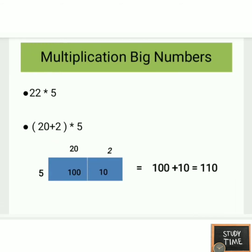Next, multiplying big numbers. In order to multiply big numbers we are going to use a shortcut — big numbers can be split into two parts. For example, 22 into 5: 22 can be written as 20 plus 2. First multiply 5 into 20, which is 100, and 5 into 2, which is 10. Then 100 plus 10 is 110. So 22 into 5 is 110.